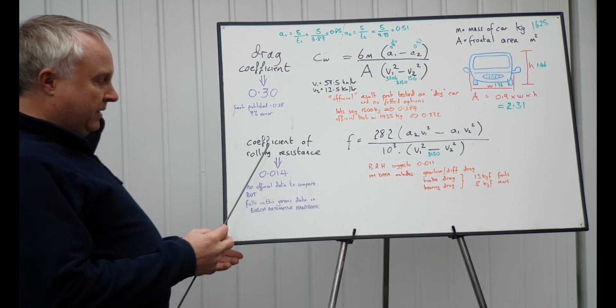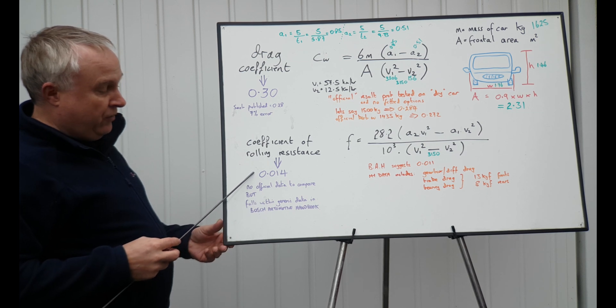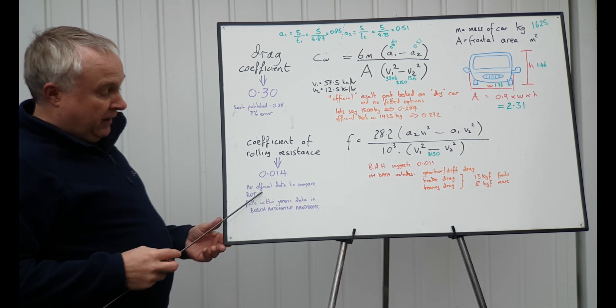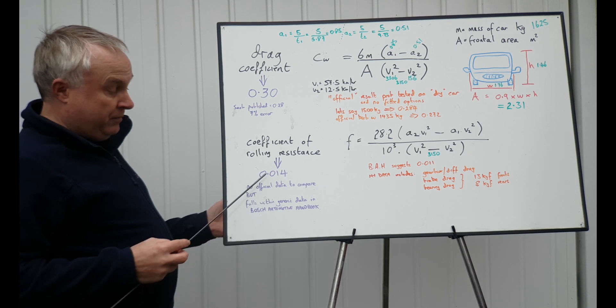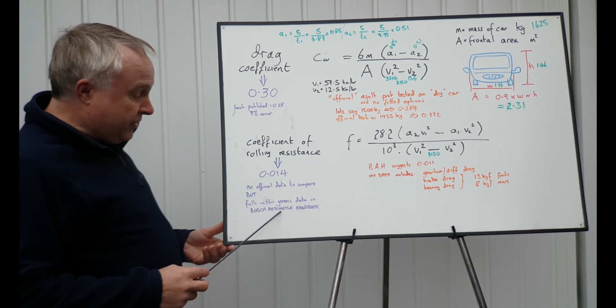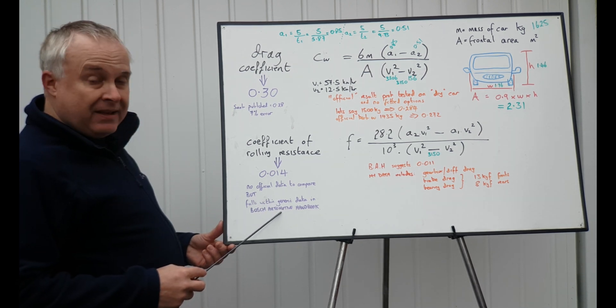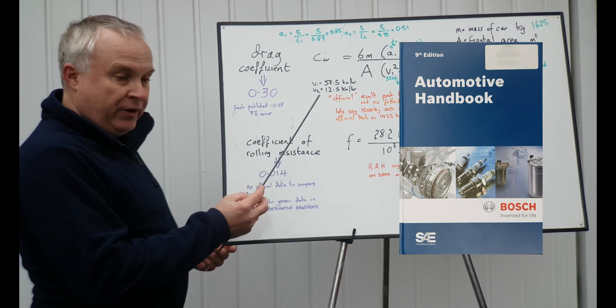The coefficient of rolling resistance I'm calculating at 0.014. I've no official data to compare that with. Saab don't publish, well, very few OEs actually publish the rolling resistance data, but it does fall within the generic data given in the Bosch Automotive Handbook. There's a picture of it up there for you.